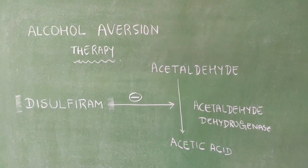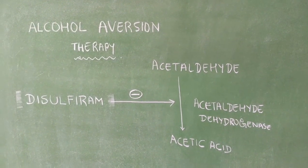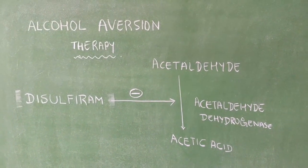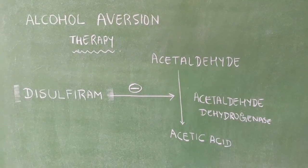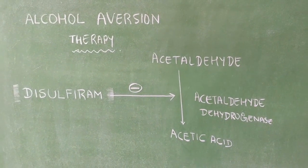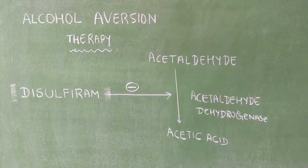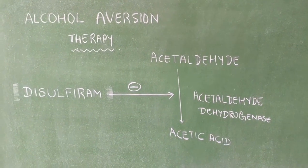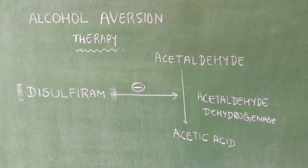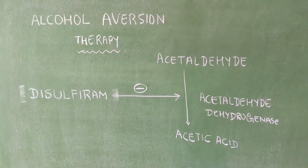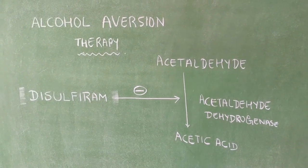So this was a short class on disulfiram. Please remember, for alcohol aversion therapy, we use disulfiram. Disulfiram will inhibit acetaldehyde dehydrogenase, thereby increasing acetaldehyde concentration, which will cause toxic effects. Thereby the person will quit alcohol. Thank you.